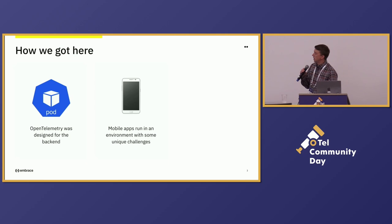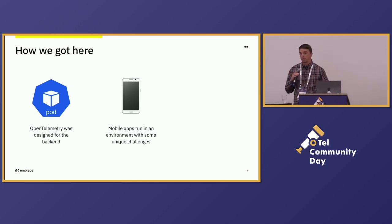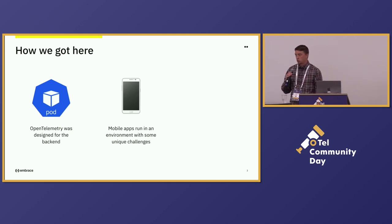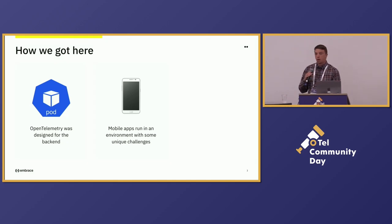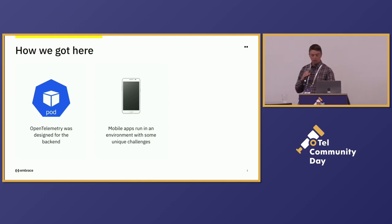Mobile apps are installed software systems running on distributed compute resources that interact with distributed systems. And there's a lot of unique challenges with that environment. You have sometimes dodgy network connectivity. You have a massive cardinality of device types. When we were looking at the number of unique devices for just one customer, there were like 42,000 different combinations of device models and chipsets. You have different regions, different OS versions, different app versions - all to say, you're dealing with lots of data coming from very disparate sets interacting with your back-end distributed systems.